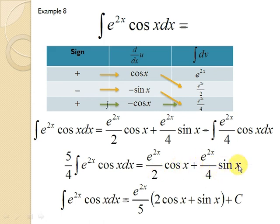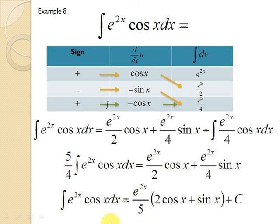Since the question asks for the integral of e^(2x) cos(x) dx, multiply both sides by 4/5. Then factor out e^(2x), and the answer is e^(2x)/5 multiplied by (2 cos(x) plus sin(x)), plus a constant C.